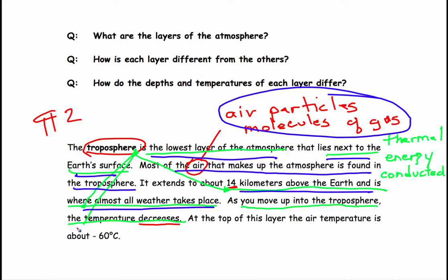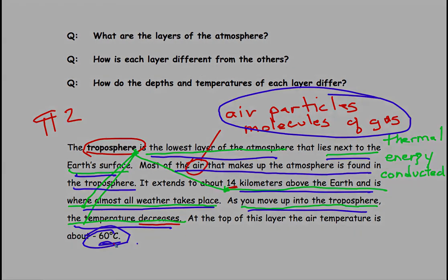As you move up into the troposphere, the temperature decreases. And then, pretty important idea here, at the top of the troposphere, negative 60 degrees. Okay, please mark your reading, paragraph 2, and we'll take a look at paragraph 3.